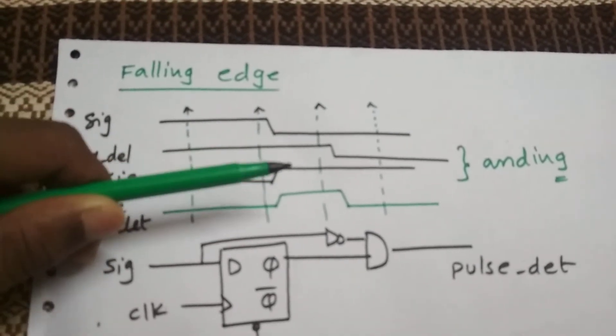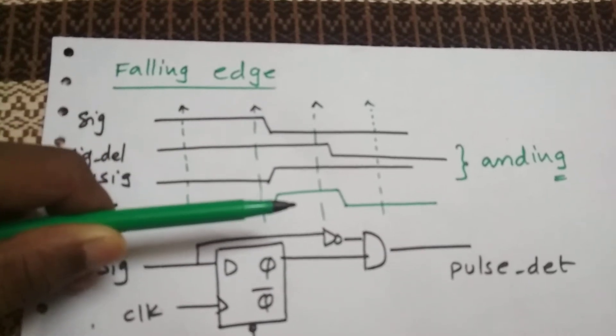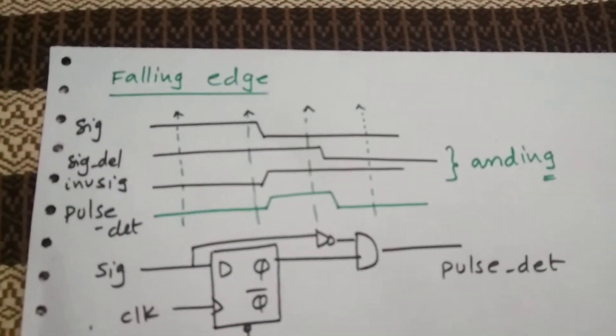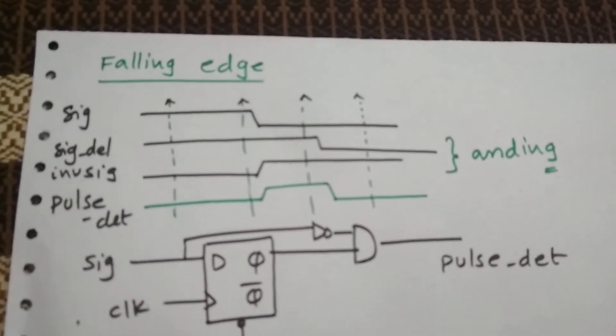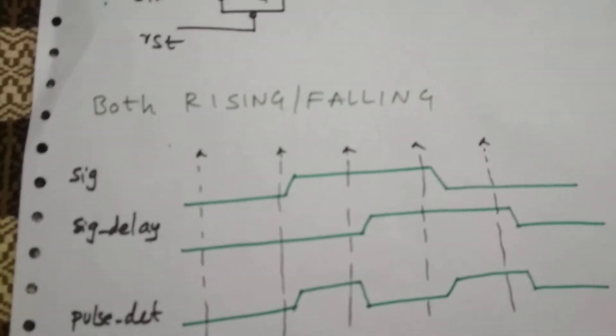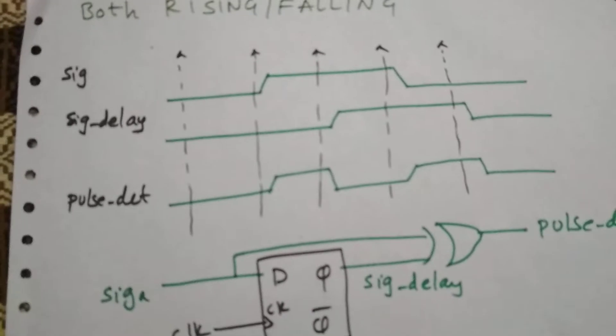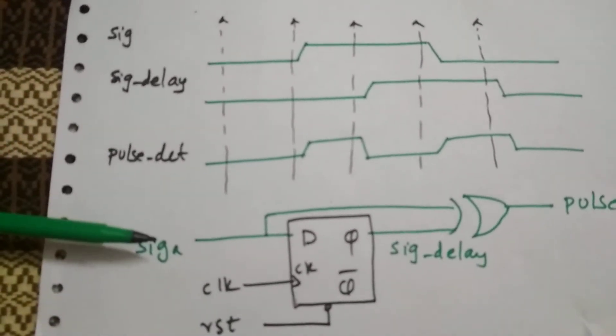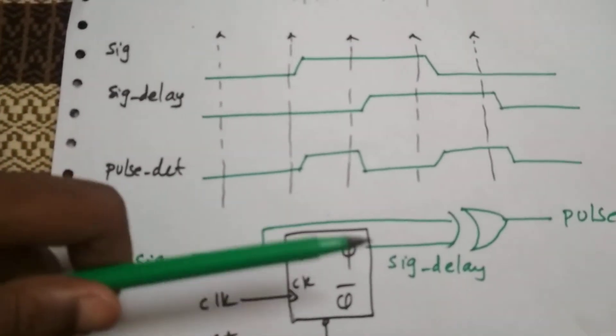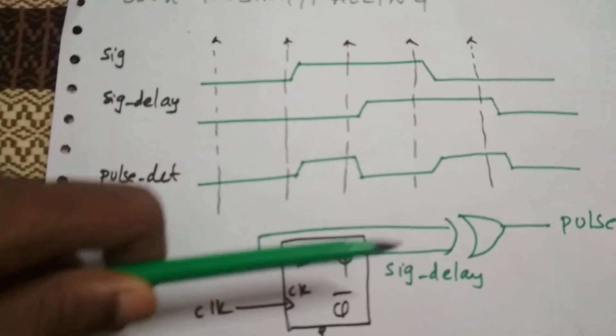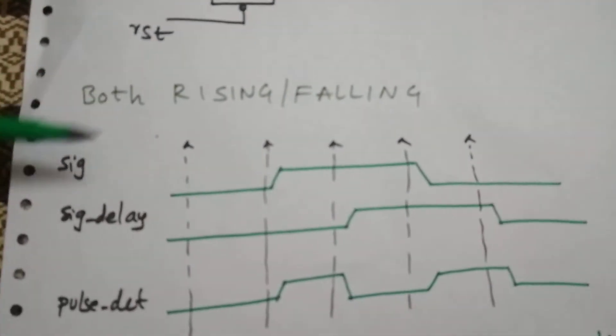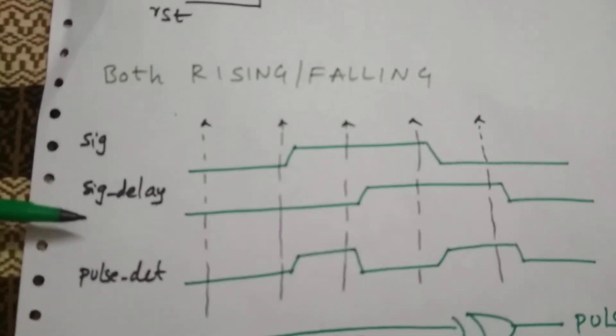We are going to AND it with the delayed signal. As we can see we have ANDed these two and we are getting a pulse. How to detect a falling edge and rising edge at the same time? To detect the rising edge and falling edge at the same time we are going to use this small circuit. We are going to pass our signal and then take the delayed signal and XOR them.